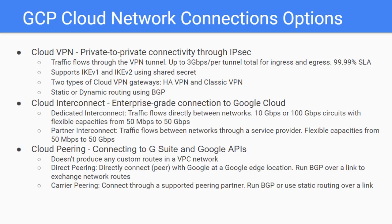Cloud Interconnect, and Cloud Peering for cloud network connections. Cloud VPN and Cloud Interconnect are the Google Cloud products for cloud network connectivity between your on-premise network and Google Cloud, or from Google Cloud to another cloud provider. Cloud Peering is the option for connecting Google G Suite and Google APIs.